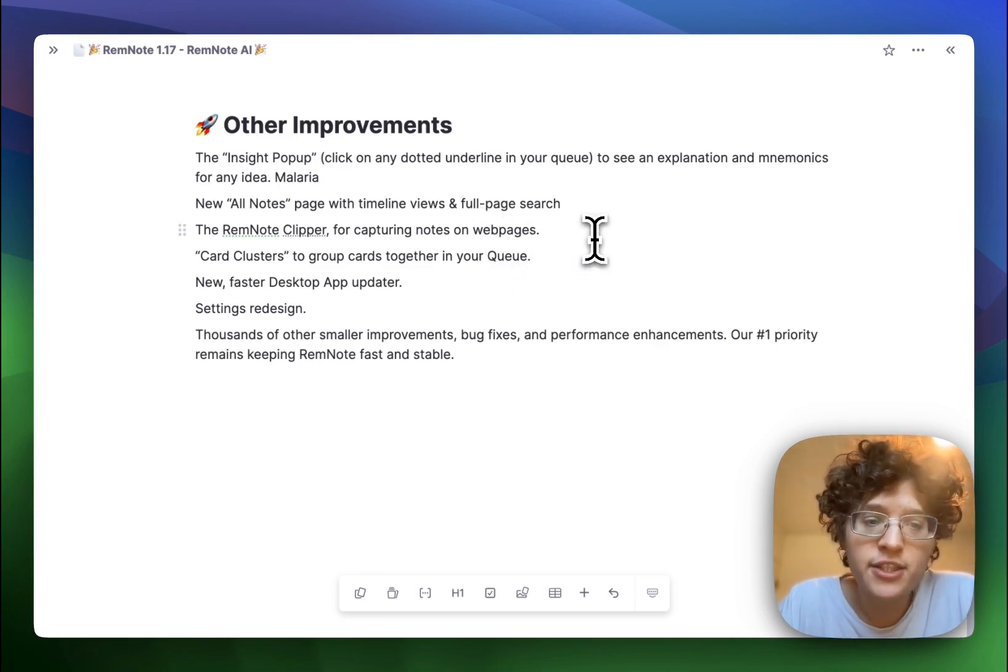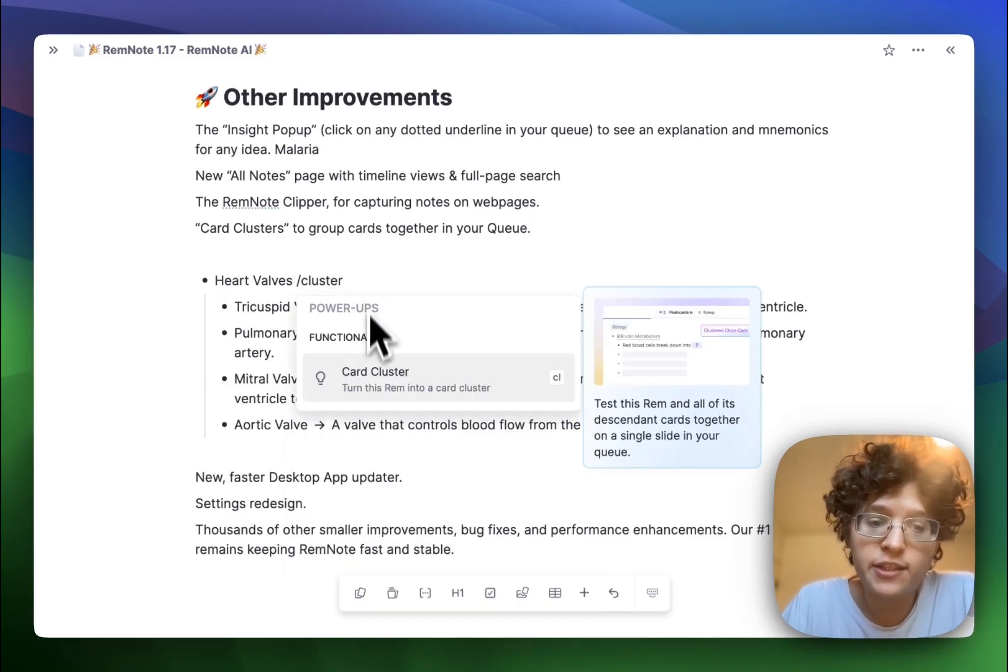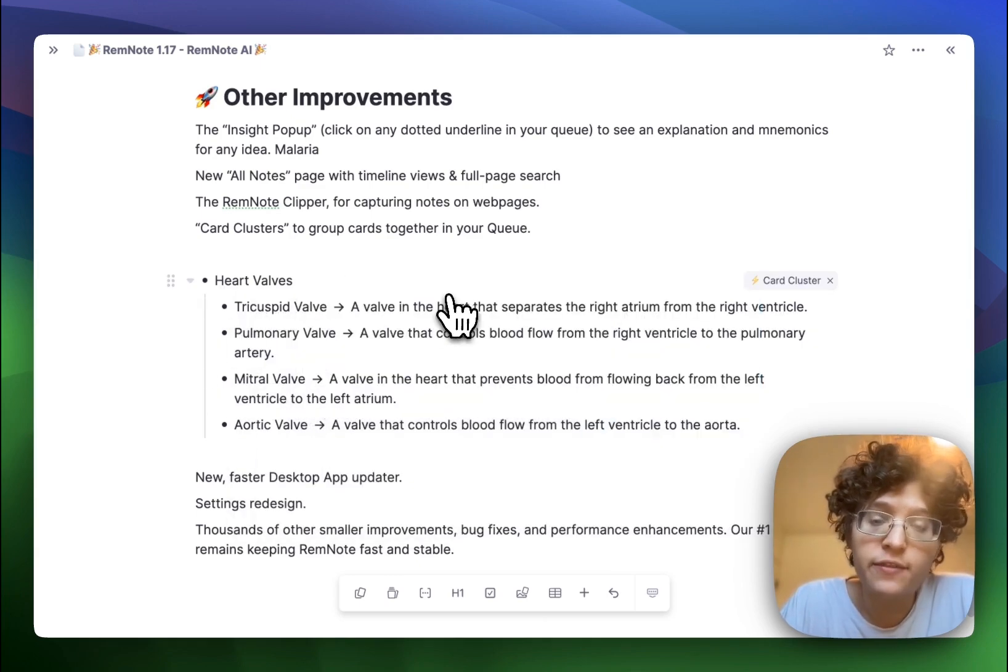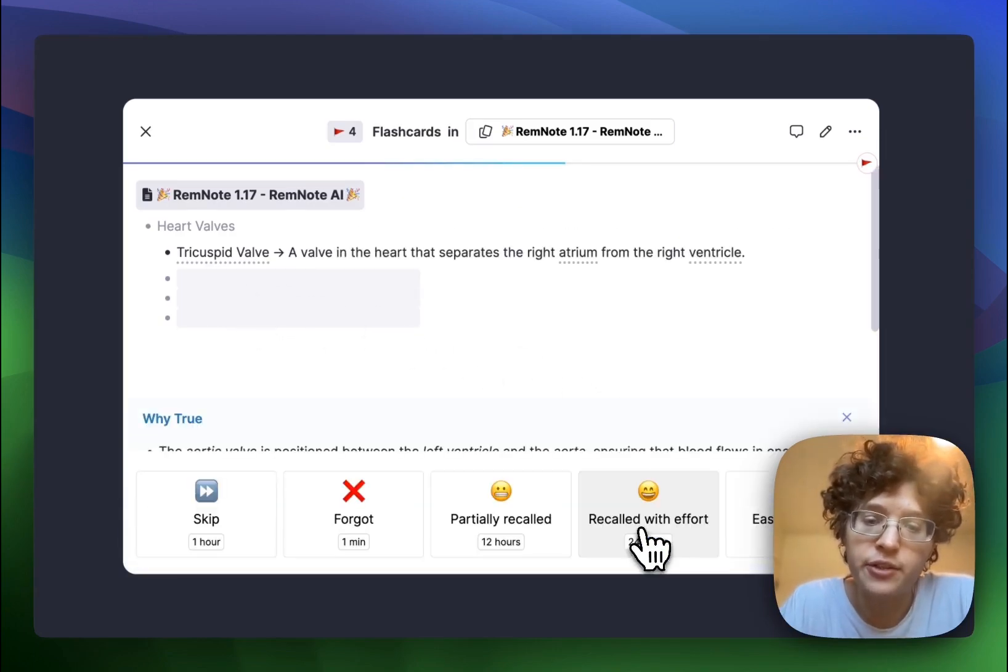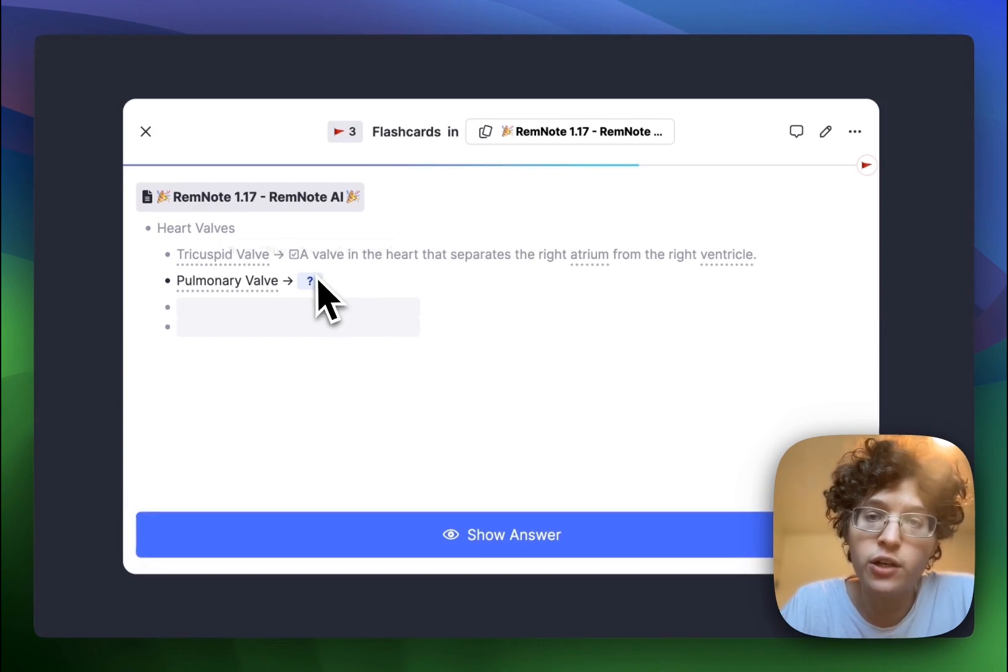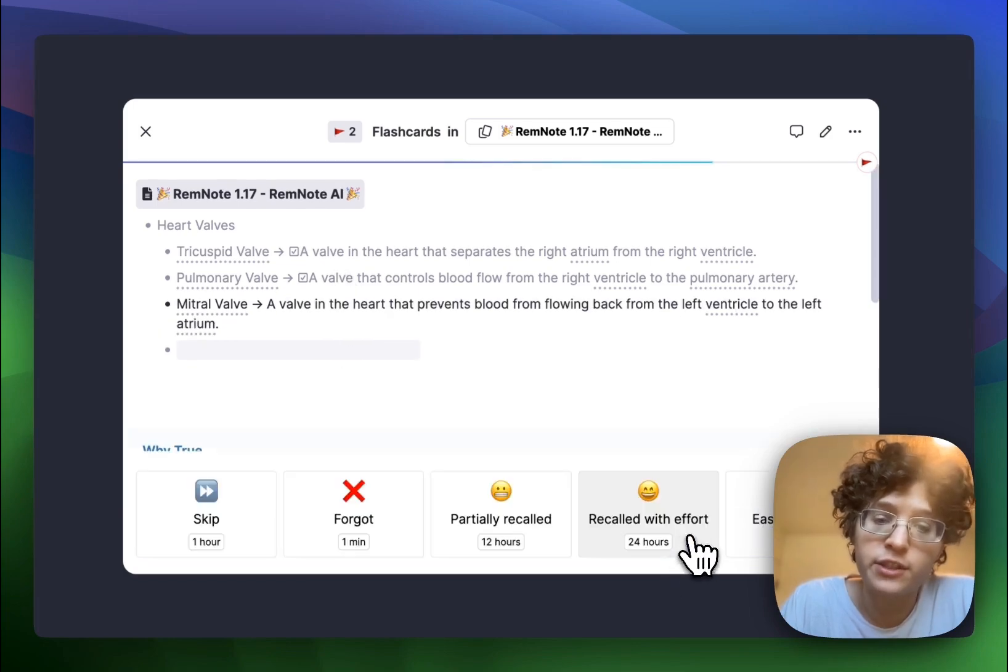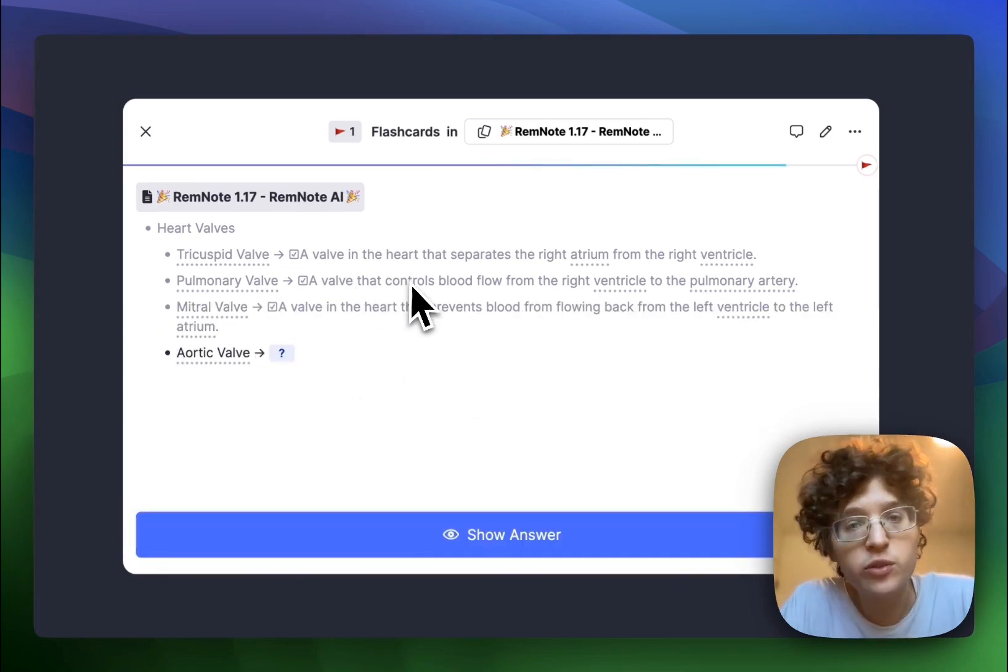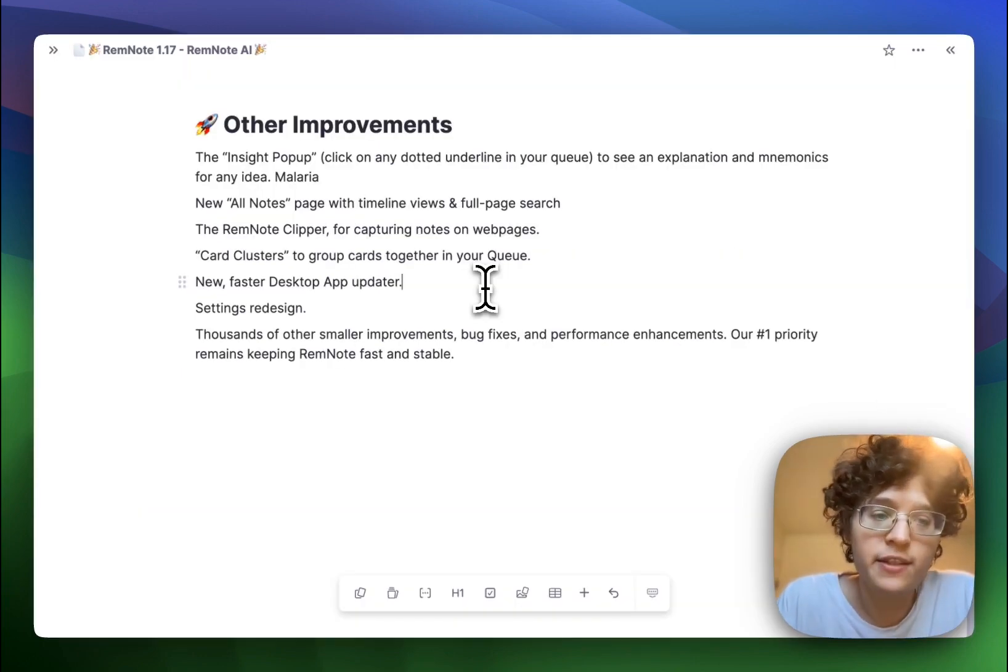We've added a new card clustering feature, which lets you create cards that are tested together in your queue. For example, if I have these cards here, I can just type slash cluster on the bullet under which they're indented. If I then go to practice them, you can see that all four of the bullets are going to be tested here together. And after I review one card, I can still see the context from the prior cards before it, which remain on my screen. This works with forward-backwards, multi-line, closed cards, all the different card types. And if you indent them, then it'll work as well.